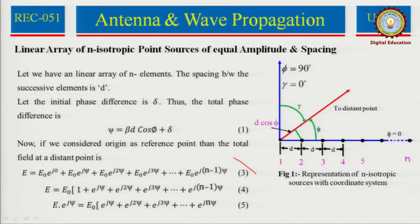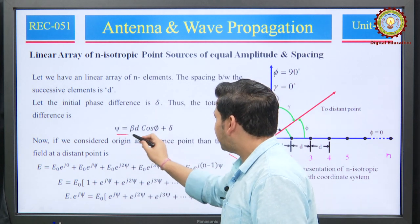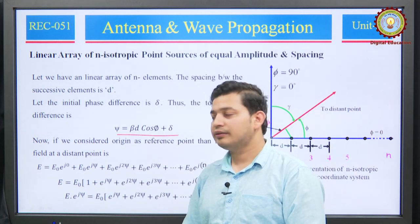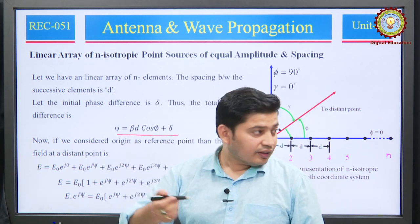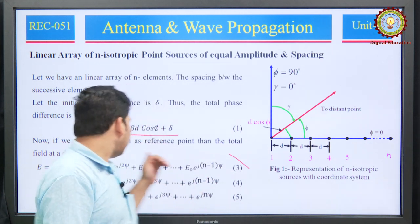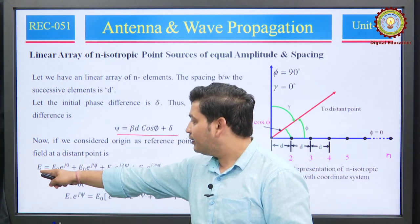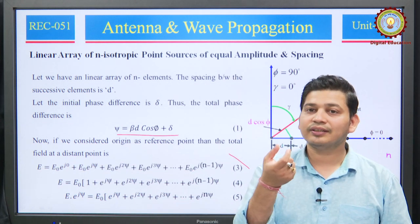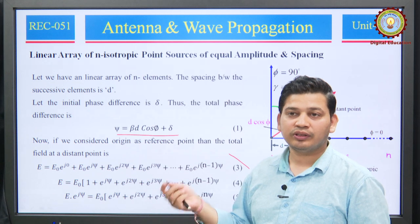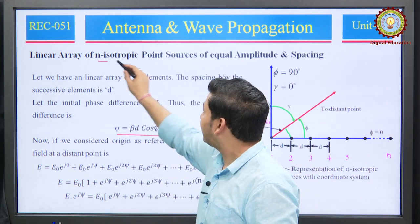Let us begin: as I mentioned, the initial phase difference is delta. The total phase difference, as represented earlier in many cases, is psi = beta*d*cos(phi) + delta, where beta is 2*pi/lambda. Now, if in this problem I have considered point number 1 at the origin — the reference point — therefore its radiation pattern can be represented as total field E equal to E-naught dash times sin(phi) or E-naught dash times cos(phi). Here I am considering isotropic point sources, represented by equation number 3.